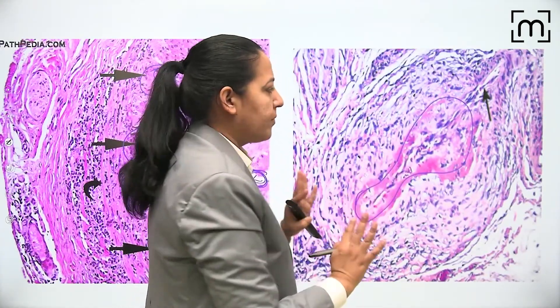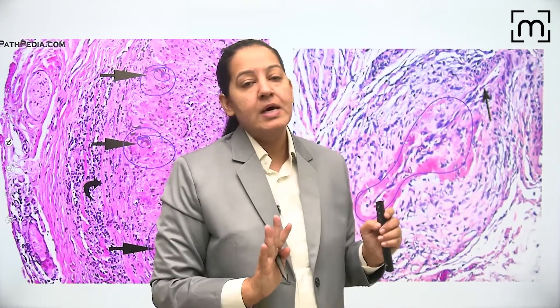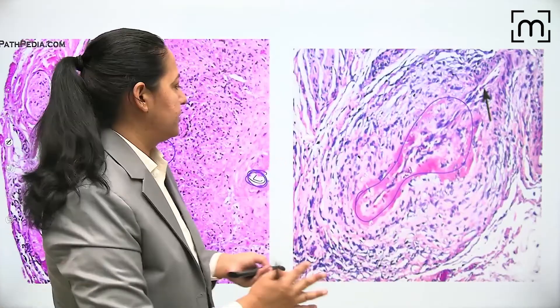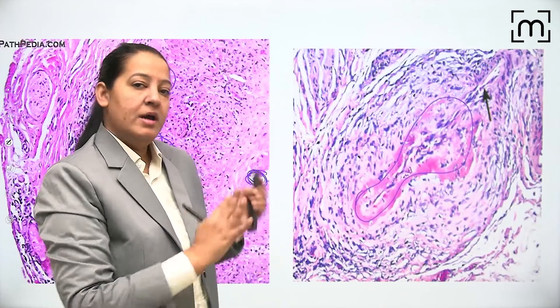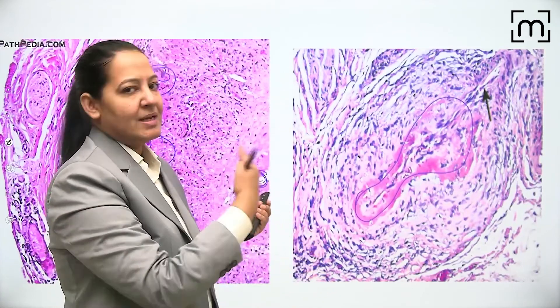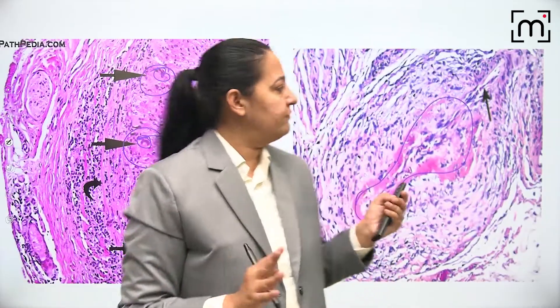In necrotizing vasculitis, there is fibrinoid necrosis in the media. You can appreciate the pink, structureless, acellular material in the media - that material is fibrinoid necrosis. Based on whether there is a granuloma or fibrinoid necrosis in the wall, the inflammation is of two types: granulomatous and necrotizing. The pathologist has to see which is present on biopsy.